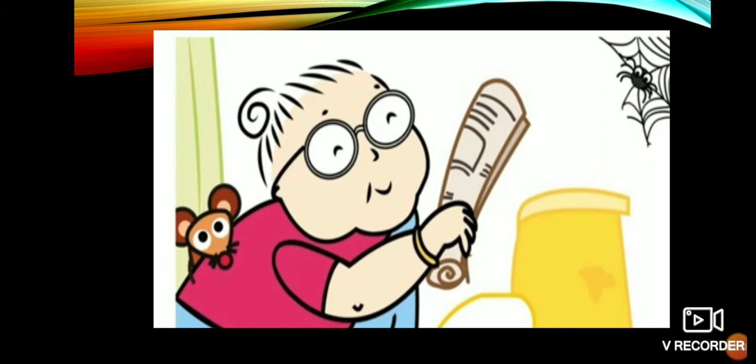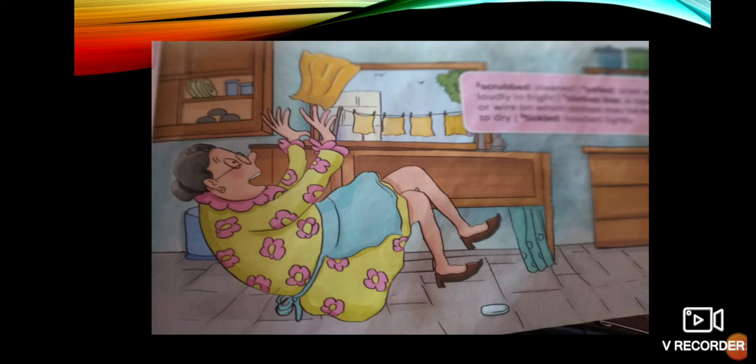Afterwards, she washed the dusters and hung them out to dry on the clothesline in the garden. Then she emptied out the soapy water but dropped the soap. When she bent to pick it up, she slipped and fell on the kitchen floor. The mouse was scared to find Mrs. Melody lying on the floor with her eyes shut. What does it mean shut? Closed.